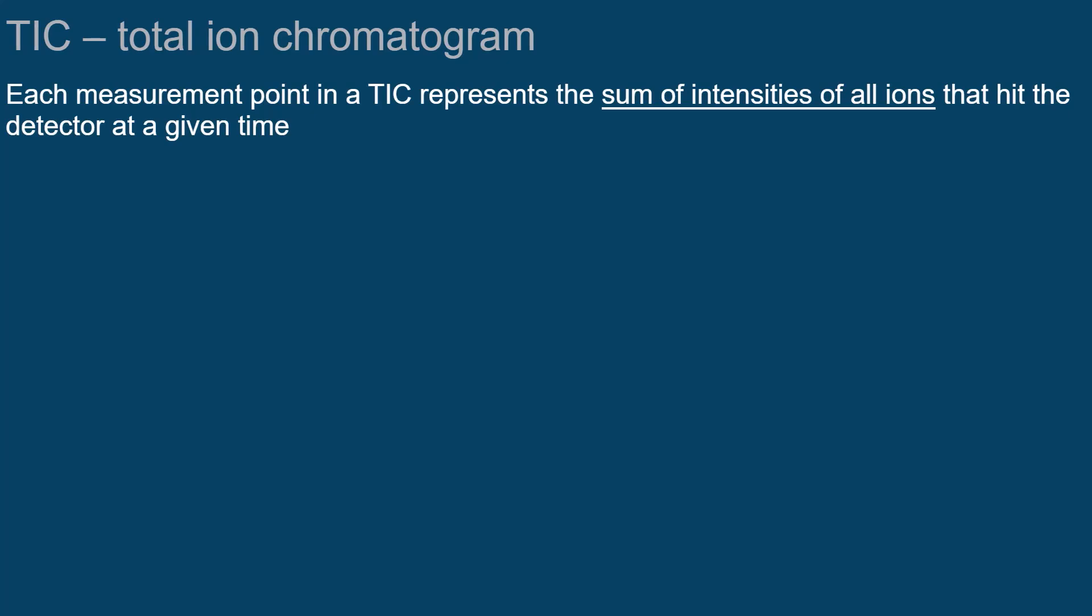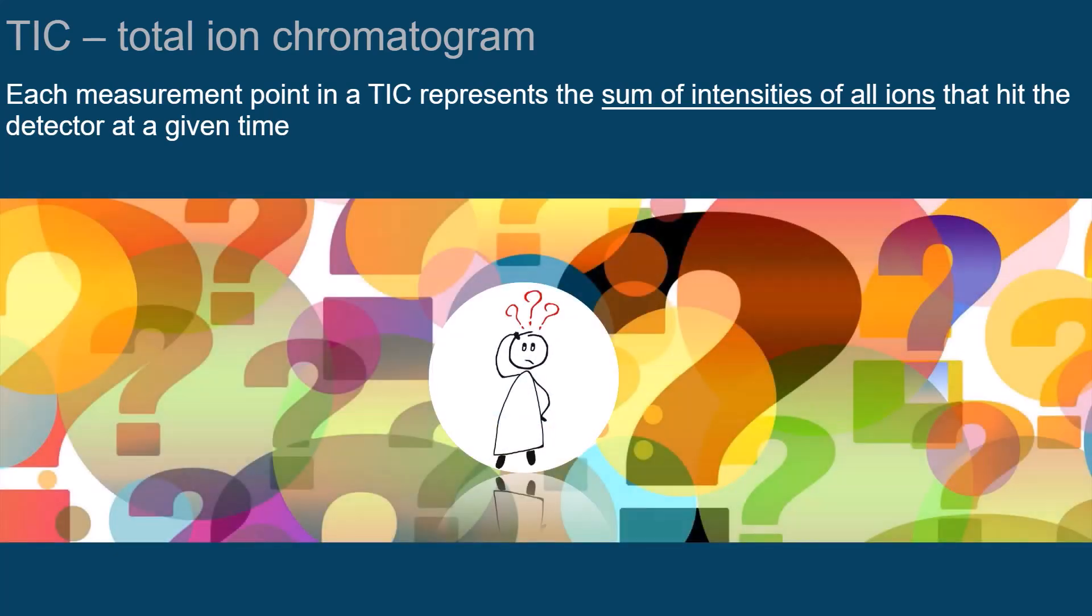Each measurement point in a total ion chromatogram represents the sum of intensities of all ions that hit the detector at a given time. To give you a better idea of what this actually means,